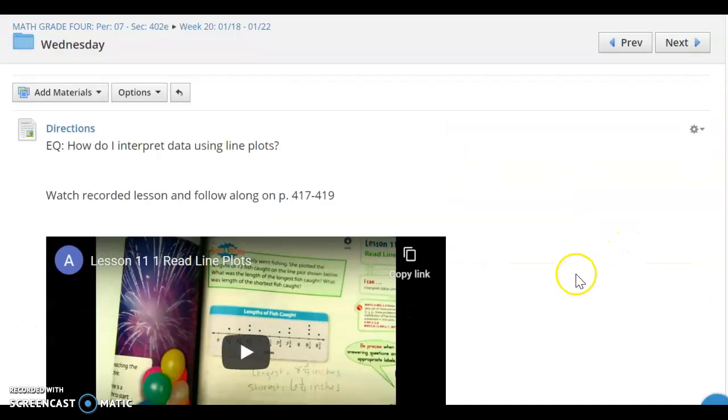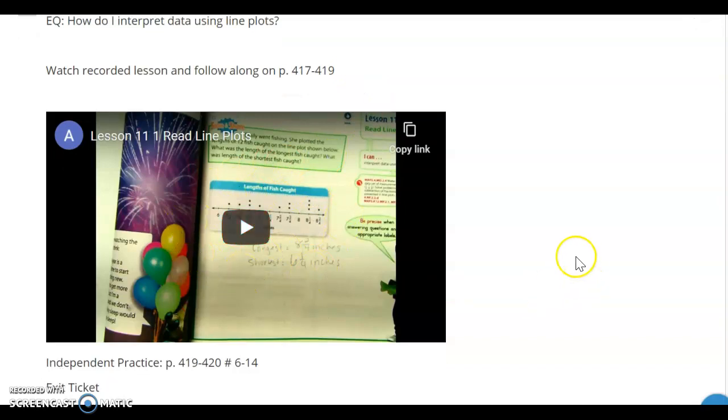And then we will look at Wednesday. Wednesday we are going to jump into something new, we are talking about line plots. So we have talked about line plots during acolytics in the mornings when we have gone through some of those practice problems. You are going to be working on pages 417 and 419 as you follow along with Mrs. Connor in this video. On your own, you are going to work on pages 419 to 420, number 6 through 14. There is an exit ticket, you will see that here, and then we will plan to meet at 2 o'clock.